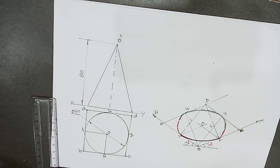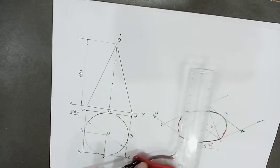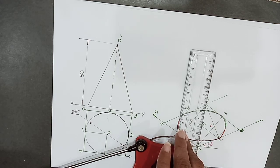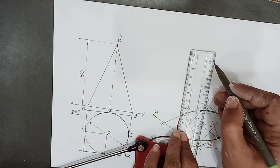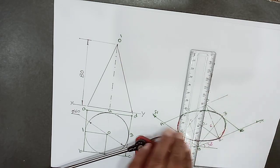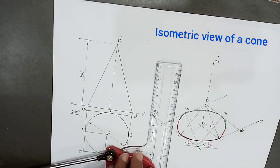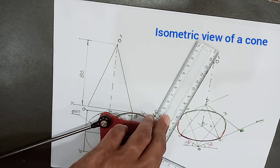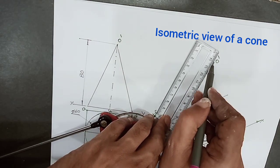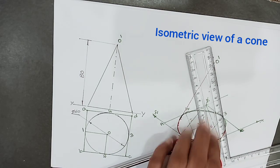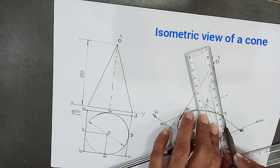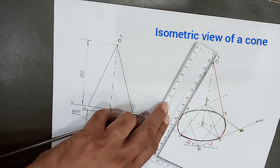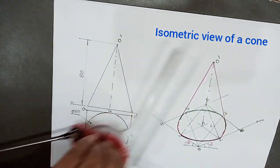At O with the given axis height, draw the axis line. Name the top point as O'. Then join extreme edges of the ellipse to O'. Join the extreme point on this side and the extreme point on the other side to O'.